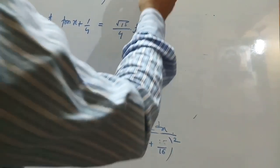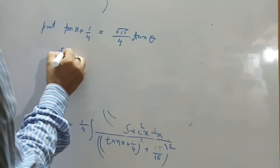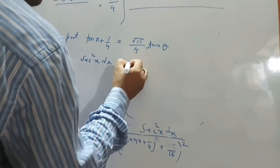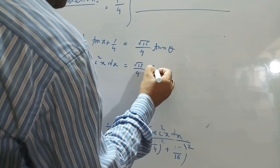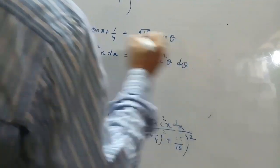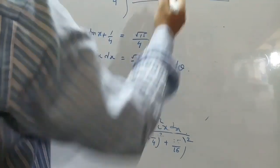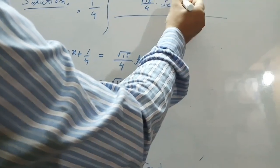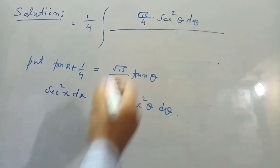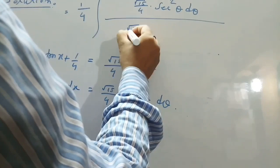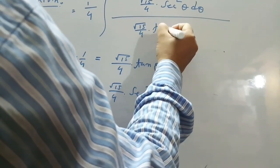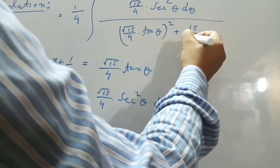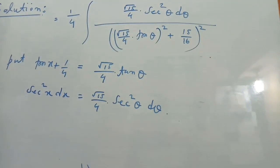This gives 1 + tan²θ, which equals sec²θ. Taking the derivative of both sides: sec²x dx = (√15/4) sec²θ dθ. Now substituting the value of sec²x dx in the numerator, we get (√15/4) sec²θ dθ divided by (√15/4 tan θ)² plus 15/16.